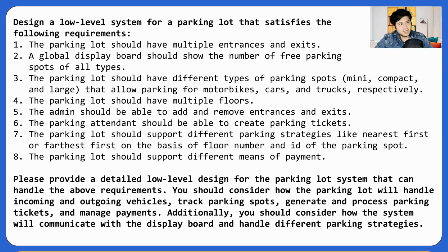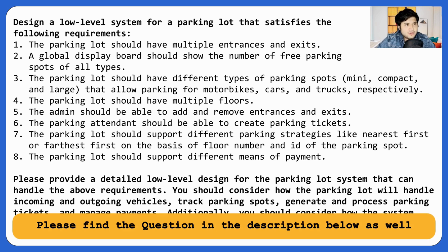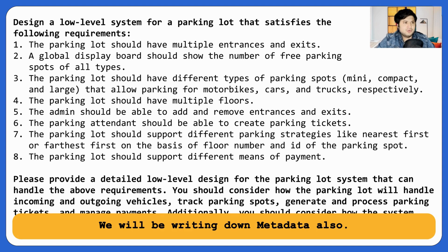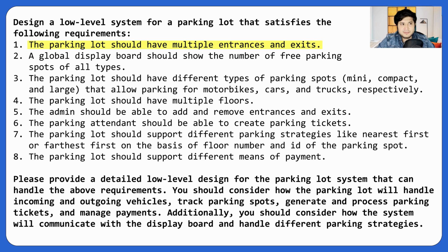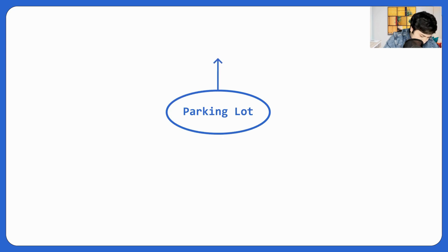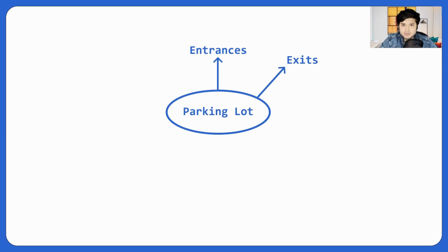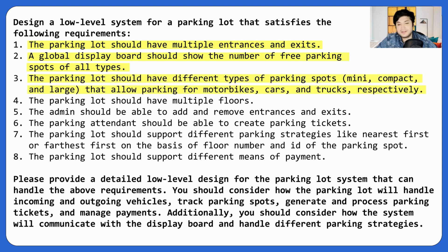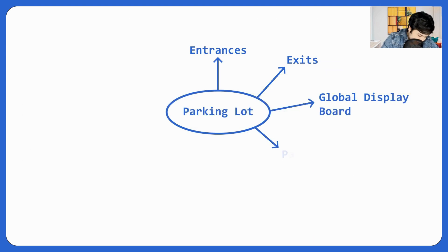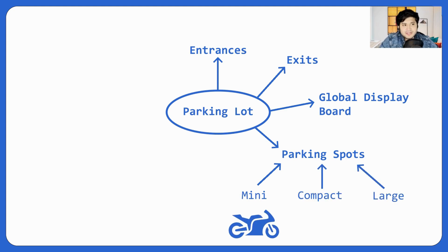Let's start with the use case diagram for the parking lot. Parking lot should have multiple entrances and exits — this is metadata, so I'll write it on the side. There's also a global display board that should show the number of free parking spots of all types. The parking lot should have different types of parking spots: mini, compact, and large, which allow parking for motorbikes, cars, and trucks respectively.